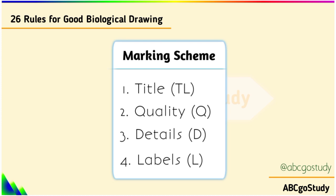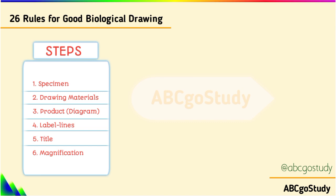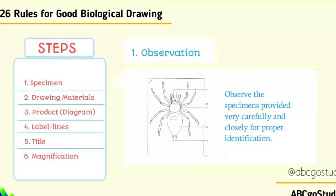The procedures are: one, check your specimen; two, look at the materials you need; three, produce the diagram; four, add label lines; five, write the title; and six, calculate the magnification to cap everything up.